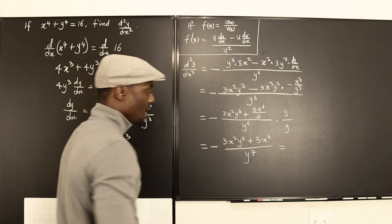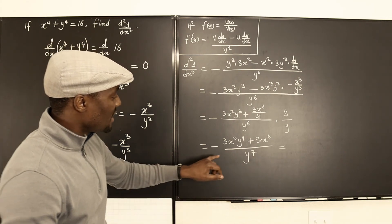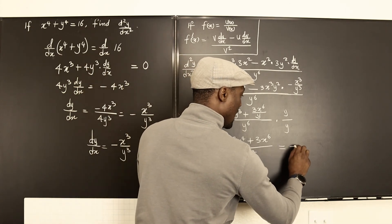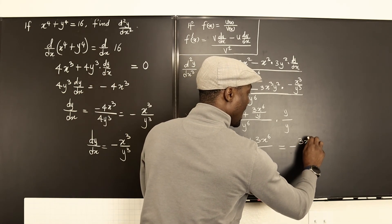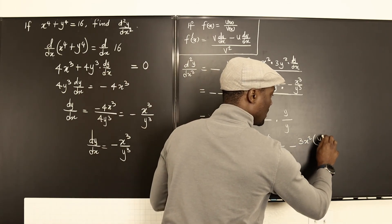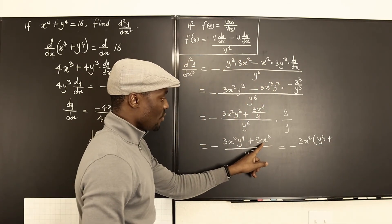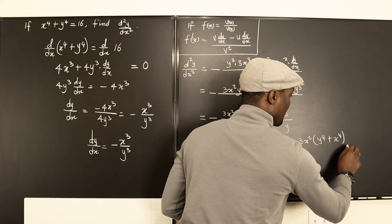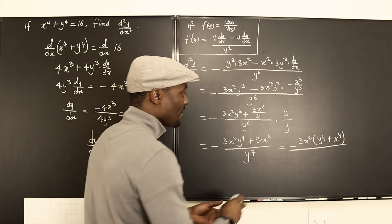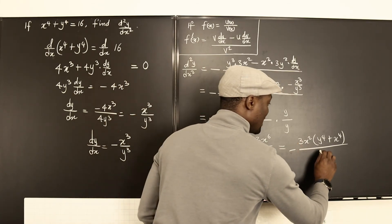Let's collect the factors we can take out. We can factor out 3x squared, so the expression becomes negative 3x squared times the quantity y to the fourth plus x to the fourth, all over y to the seventh.